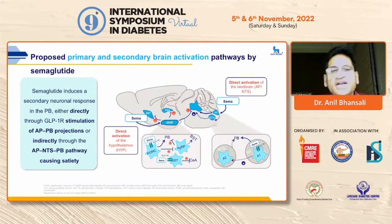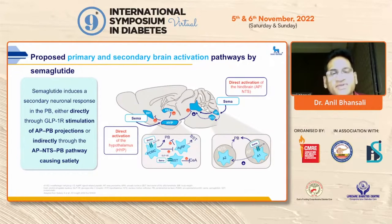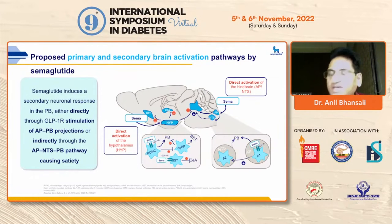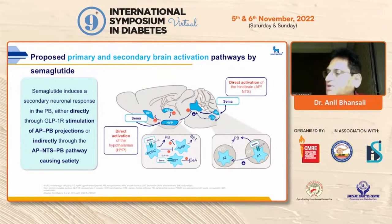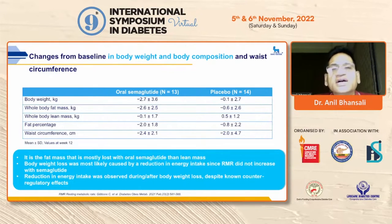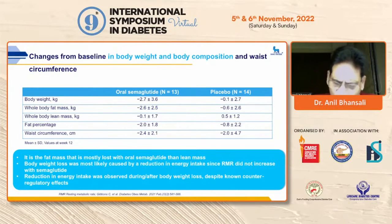How does semaglutide act? It acts via direct and indirect pathways, acting on the area postrema and nucleus tractus solitarius in the brainstem pathway, increasing satiety. Importantly, it is mainly satiety that drives its effects — there is not much change in resting energy expenditure. Reduced food intake, not increased energy expenditure, is responsible for the weight loss. Body fat mass is remarkably reduced, with only a very modest loss of lean muscle mass, which happens with any weight loss therapy.